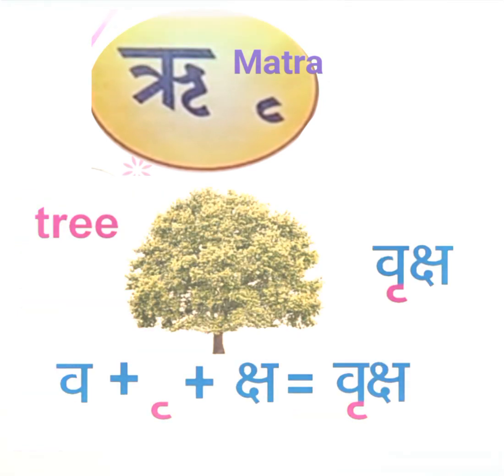If we add re-matra to the word va, va becomes vr. Add ksh — vraksh. Vraksh means tree.